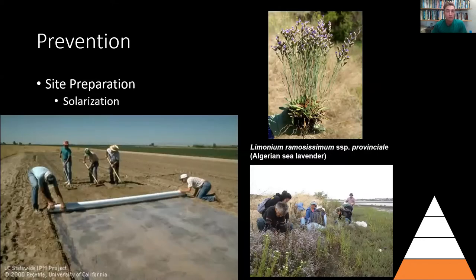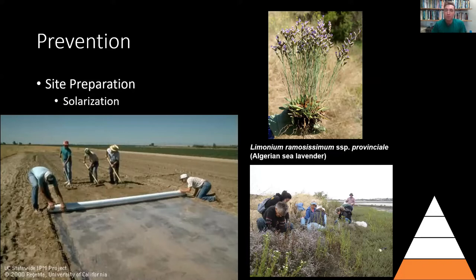One strategy that goes hand in hand with cultivation is solarization — simply using the heat of the sun to kill weed plants. This is done in agricultural settings by rolling out large tarps. If you roll out a black tarp, it's going to heat up. If you roll out a clear tarp, it's going to let light through and turn into a little greenhouse. Both types of tarps can be successful depending on the climate of the region and the season. Solarization is even used as a restoration tool.